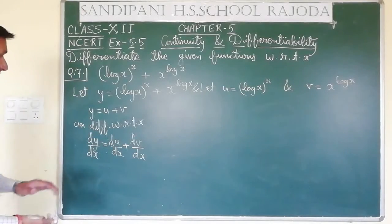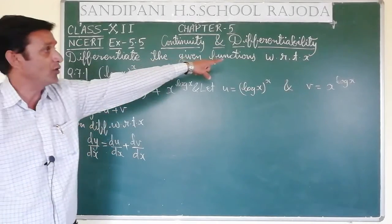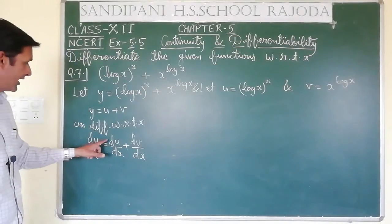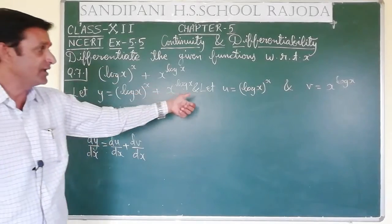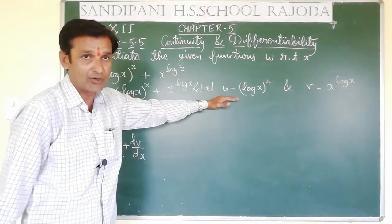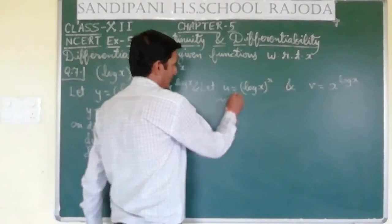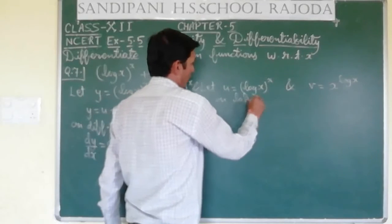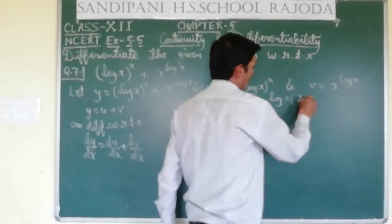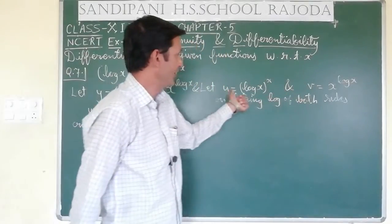As we did in the previous questions, if y is u plus v, then our basic function needs to be differentiated with respect to x. Since y is a function of x, we need dy by dx, which means we need du by dx plus dv by dx. To find du by dx and dv by dx, we have to take log of both sides in both cases.